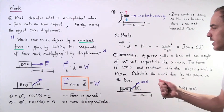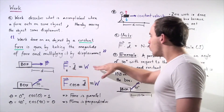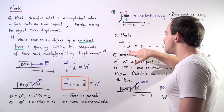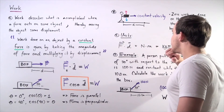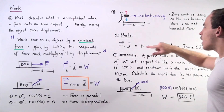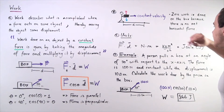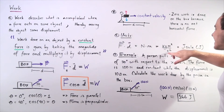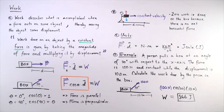Work is a scalar. What are the units of work? Work equals force multiplied by distance. Since force is in newtons and displacement is in meters, work is given in newton-meters, which is the same as kilograms times meters squared divided by seconds squared. This unit is known as the joule, symbolized by J.